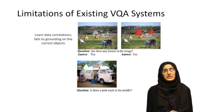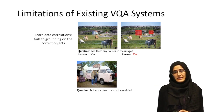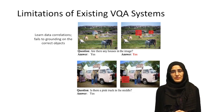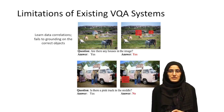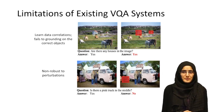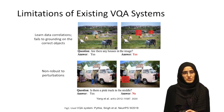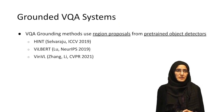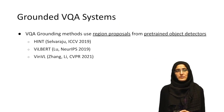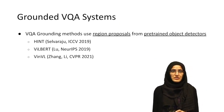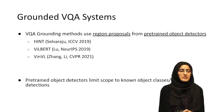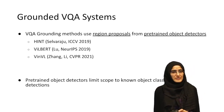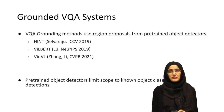Here is another example where the question is: is there a pink truck in the middle? We can see there is a pink truck, so the model answers correctly. But if we mask out some background objects, the model changes its answer to no. So it is also not robust to perturbations. On the other hand, grounded VQA systems use region proposals as input from pre-trained object detectors, which limits the scope to only known classes, leading to noisy detections for unseen classes.